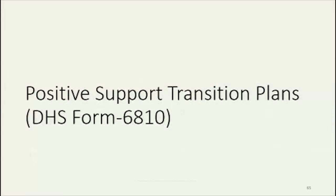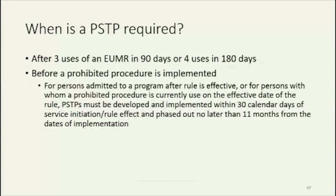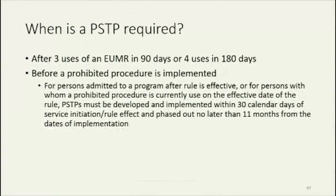Now we're moving on to positive support transition plans. Positive support transition plans are a specific document required to be developed by the expanded support team to implement positive support strategies, to eliminate the use of prohibited procedures, to avoid the emergency use of manual restraint, to prevent the person from physically harming self or others, and to improve the person's quality of life. A positive support transition plan is required after three uses of an emergency use of manual restraint in 90 days or four uses in 180 days. Emergency use of manual restraint is not prohibited — it is restricted. A positive support transition plan is also required before a prohibited procedure is implemented.